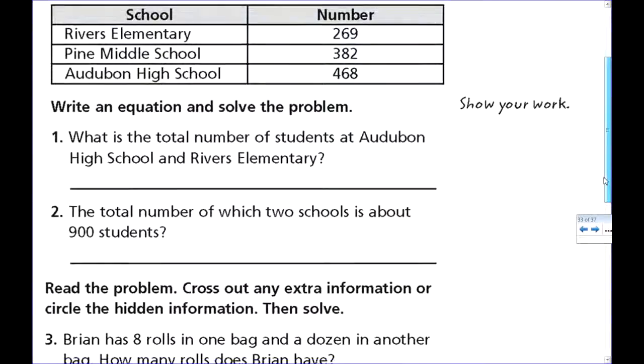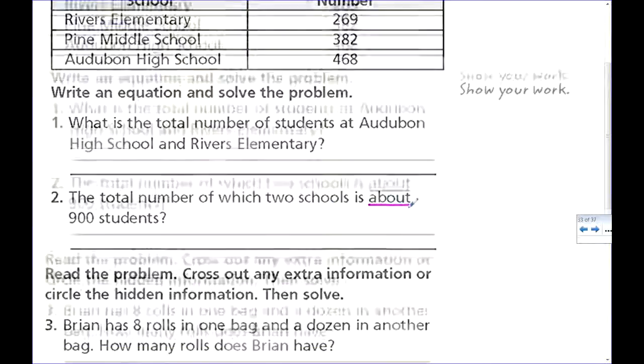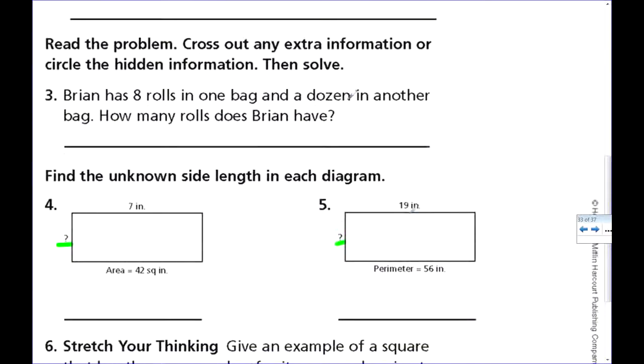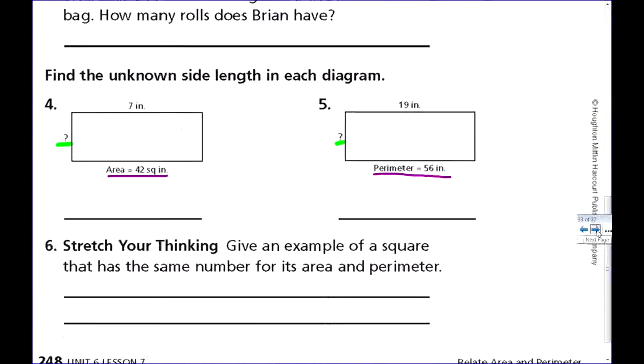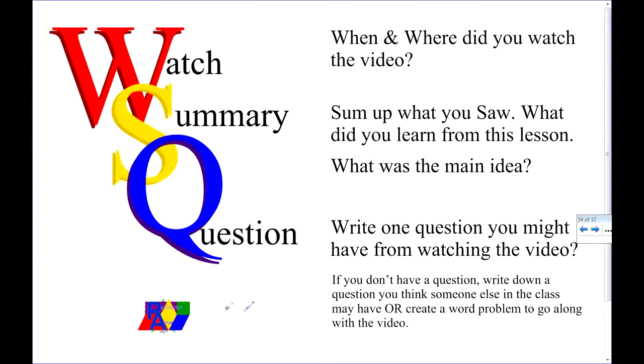we're going to go over some problems that add and estimate, because it uses the word about. And you're also going to be looking at some other squares. And this is looking at the unknown side. So you have to find the area with this one, and with this one, you have to find the perimeter.